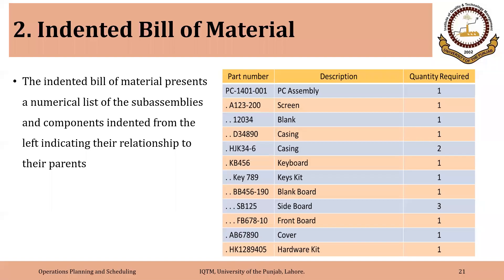The second level of bill of material that is practically more commonly used is the indented bill of material. The indented bill of material presents a numerical list of the sub-assemblies and components indented from the left, indicating their relationship to the parent.